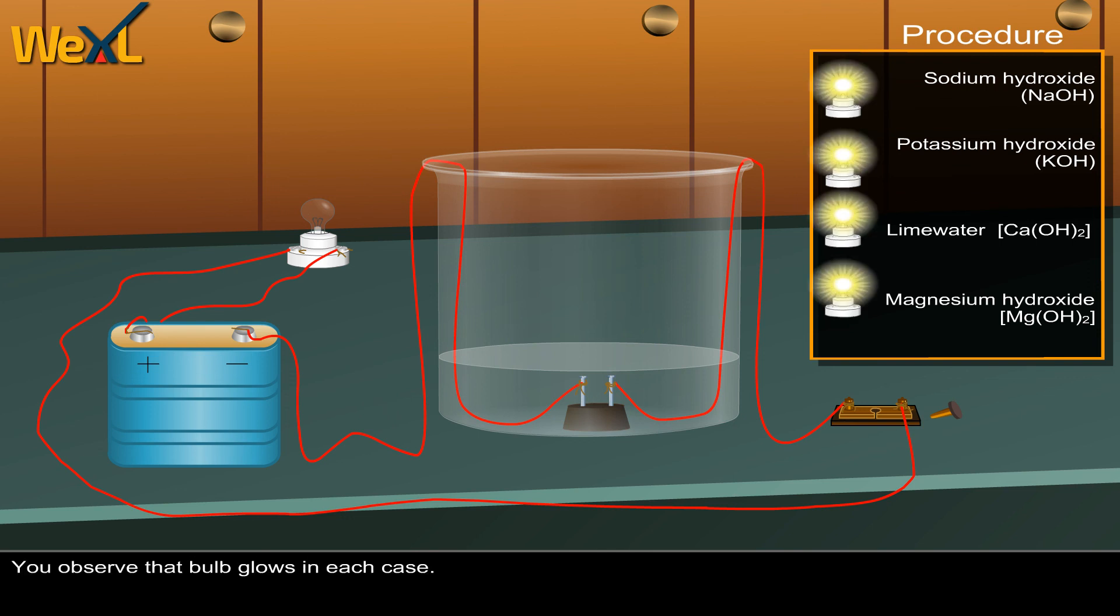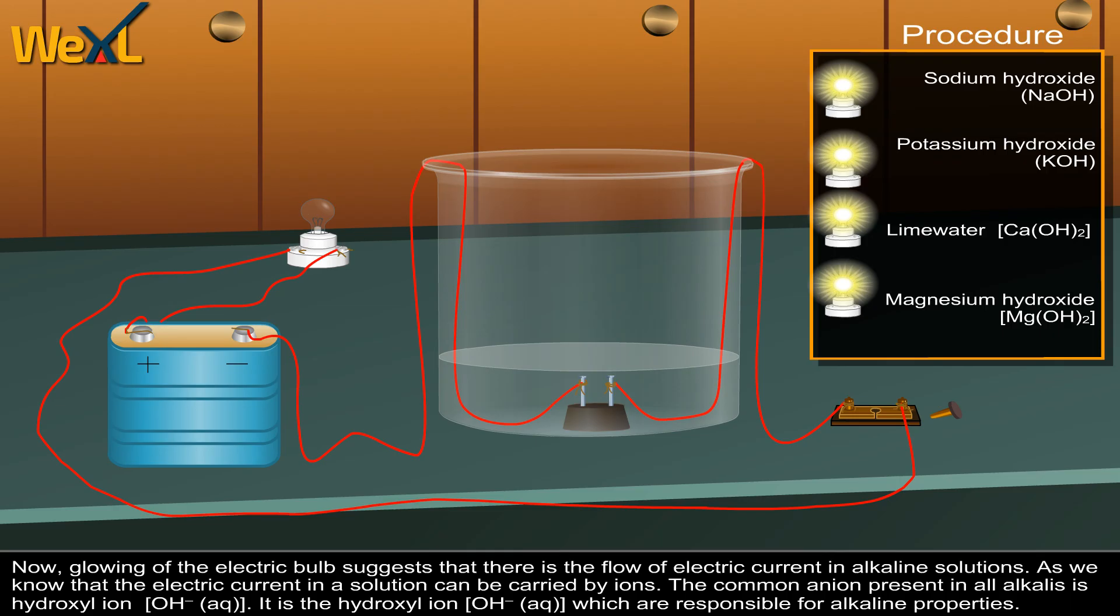You observed that the bulb glows in each case. Now glowing of the electric bulb suggests that there is flow of electric current in alkaline solutions.